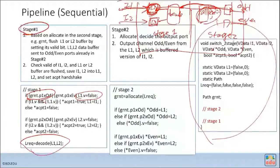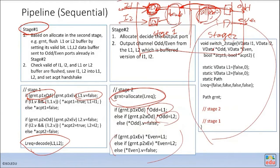For stage two, it assigns to the output port. You do the arbitration to decide which input port is allocated to which output port, then assign the value from the input buffer to the output. Importantly, in this example the top function evaluates stage two first, and then stage one.